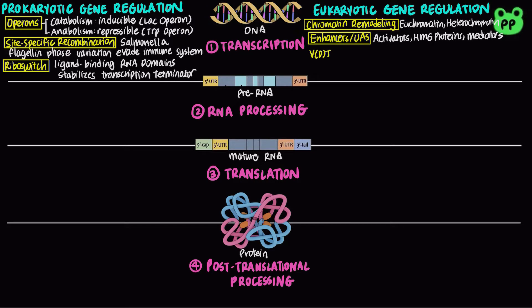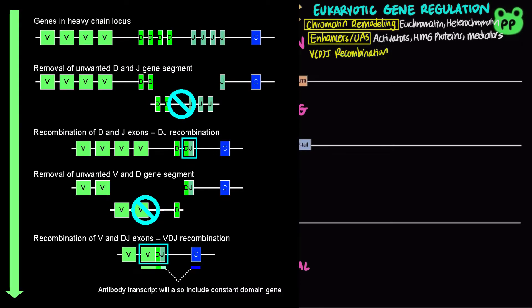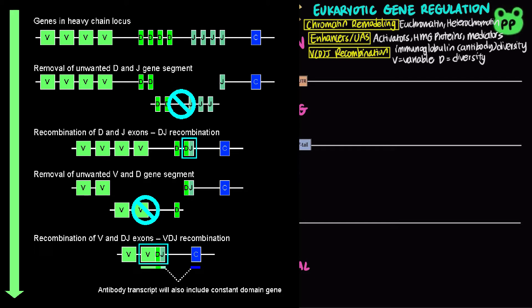Transcription of immunoglobulin, also known as antibodies, is regulated by VDJ recombination, which increases antibody diversity. Antibodies consist of two heavy and two light polypeptide chains, each containing two regions: the variable region and the constant region. The V in VDJ stands for variable, D stands for diverse segment, and J stands for joining segment. VDJ recombines the DNA between a particular V segment and a J segment. The segments are then recombined in many possible ways, producing diverse antibodies.